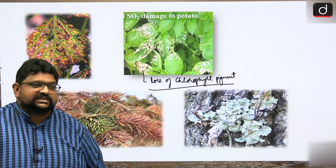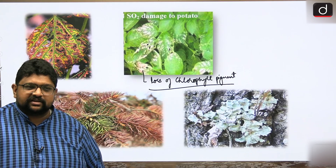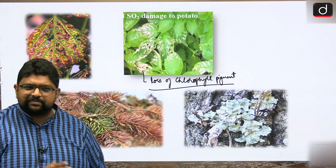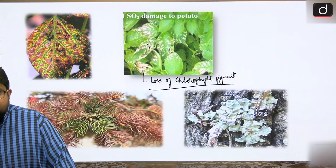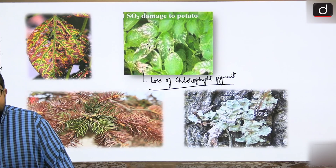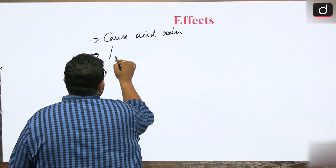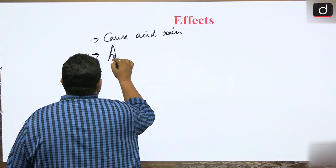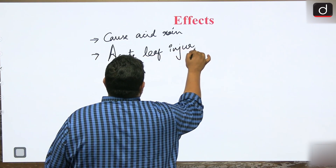From various symptoms we can determine what is excess or deficient in the environment or soil. For example, complete yellowing of a leaf indicates nitrogen deficiency in the soil, and yellowing of young leaves indicates sulphur deficiency. These are deficiency indicators. SO₂ damages potato leaves - this is called acute leaf injury.